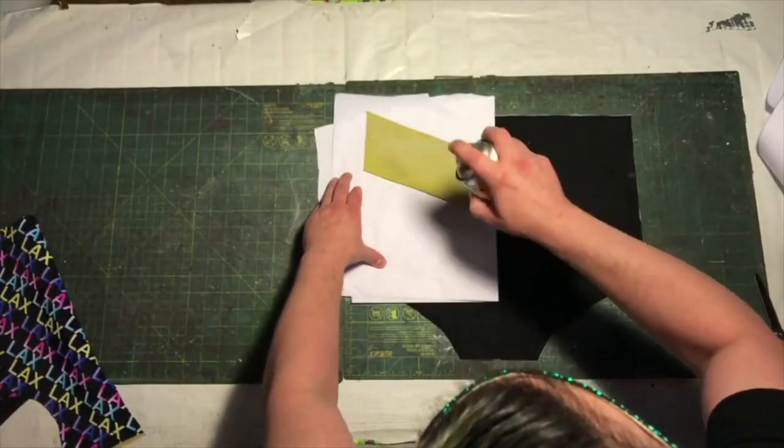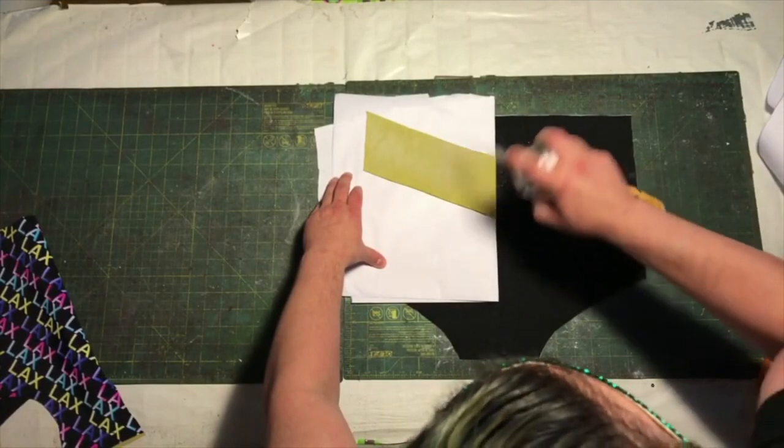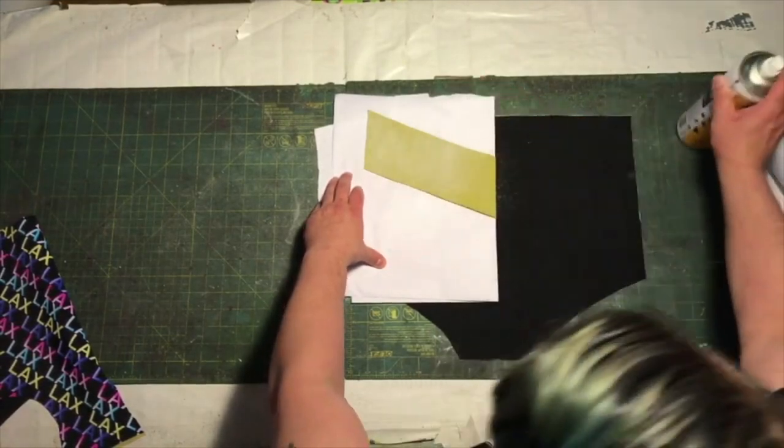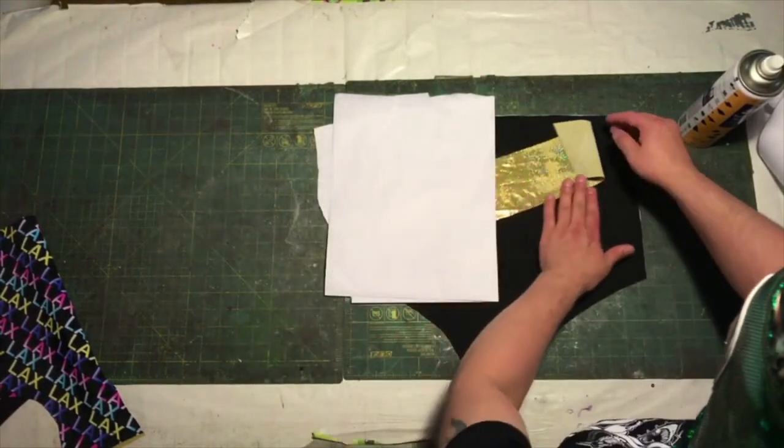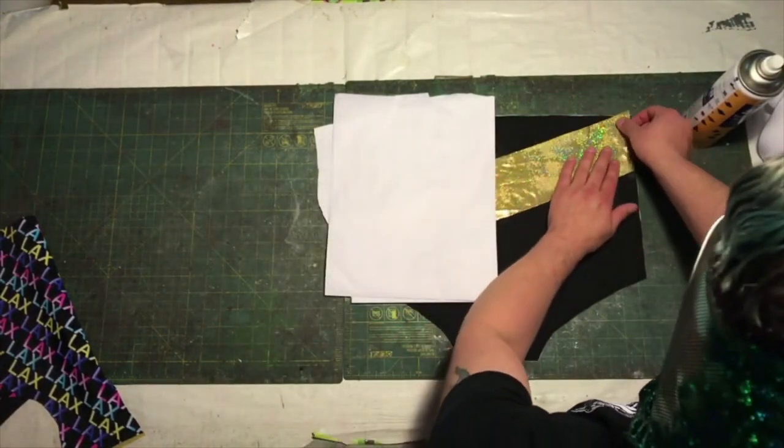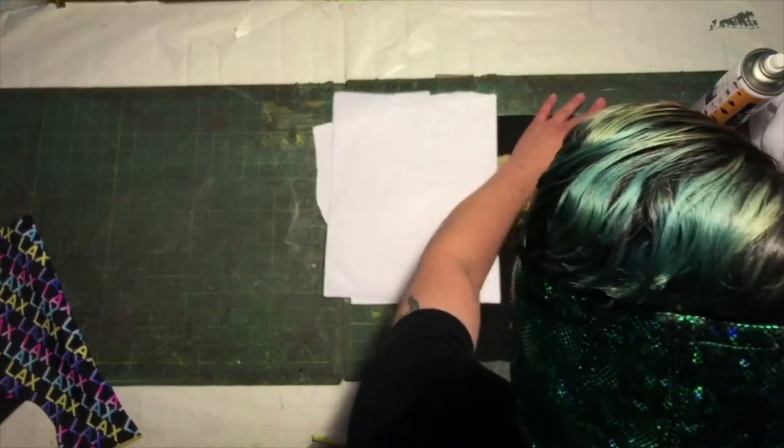Once the trunks are lined and cut out, we use more spray adhesive to attach our applique. Remember those chalk marks we made earlier when cutting out the base? This is when they come in handy. The marking helps ensure the applique is lined up as evenly as possible.